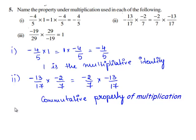Now let us move on to the third bit of the question. The third bit given is -19/29 × 29/-19 = 1. When two rational numbers are multiplied to get the product 1, then the two rational numbers are called multiplicative inverse of one another.